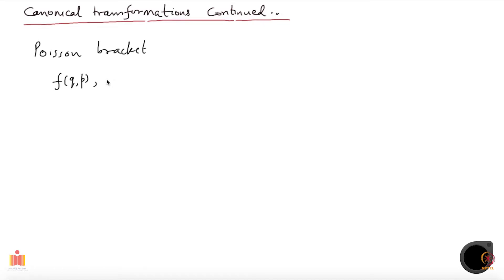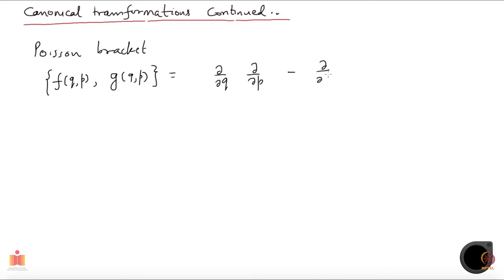I am not assuming that it is only a one-dimensional system; you could have an n-dimensional system. So your q will run from q1, q2, and so forth to qn. For two functions f and g, I can construct this quantity which is called the Poisson bracket. Your k runs from 1 to n and there is a summation over k implied — you have the f and g terms. That is what the Poisson bracket is, and it is an antisymmetric quantity.